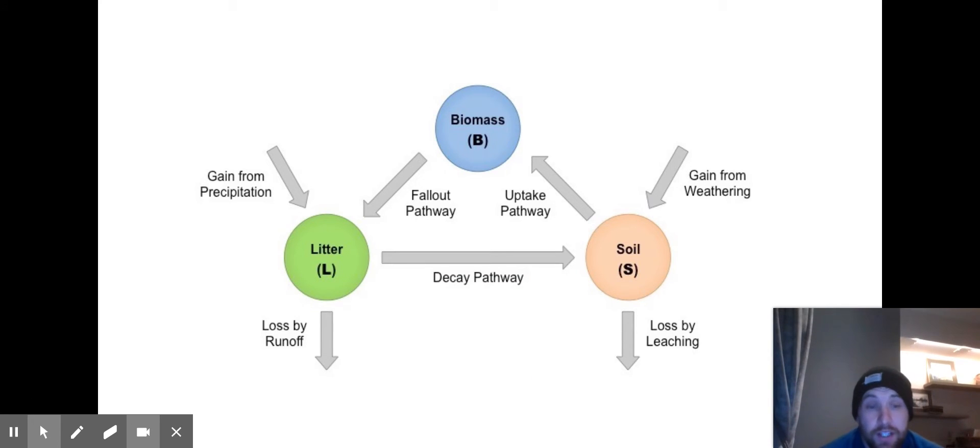The nutrient cycle shows a relationship between three different stores of nutrients. The soil is the nutrients stored within the top layer, broken down into rocks and decomposed material called humus, which is leftover biotic material.